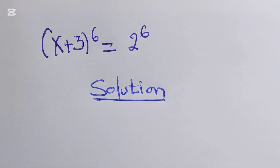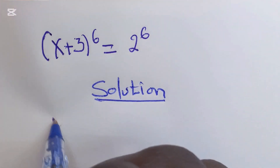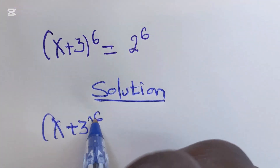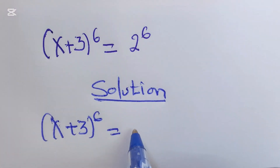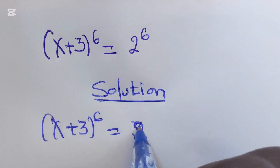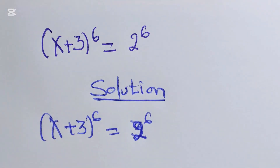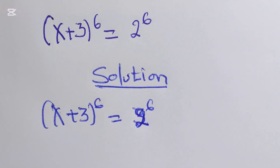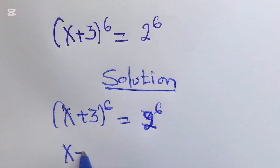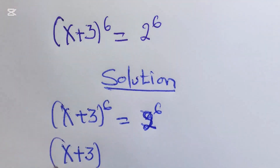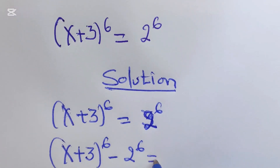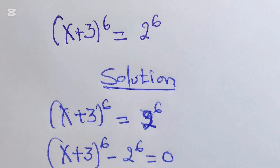Now, we have x plus 3 to the power of 6, which is equal to 32 to the power of 6. This can be written as x plus 3 to the power of 6, then minus 2 to the power of 6, which equals 0.